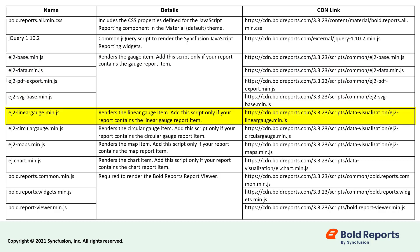EJ2CircularGauge.min.js renders the circular gauge report item. EJ2Maps.min.js is used to render the map report item. EJ.chart.min.js renders the chart report item. Bold.reports.common.min.js, bold.reports.widgets.min.js, and bold.reportviewer.min.js are required to render the Bold Reports report viewer.